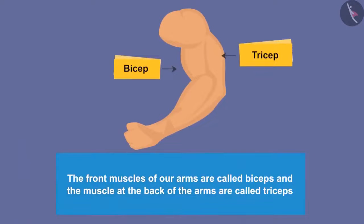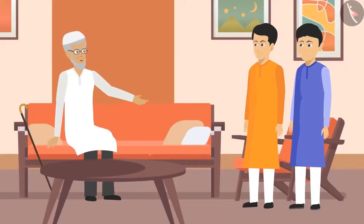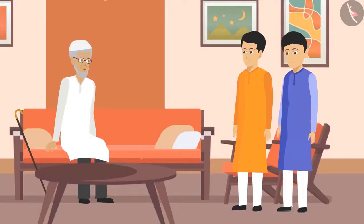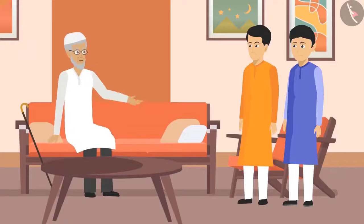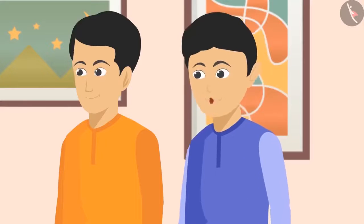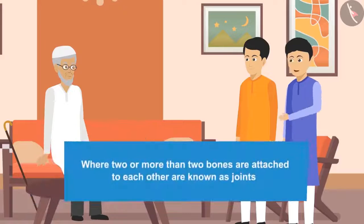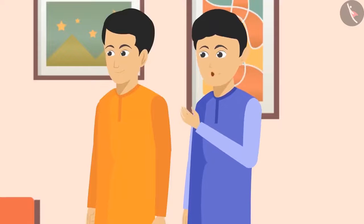Chacha asked whether we can bend or rotate body parts like hands and legs at places other than the joints. The answer was no. The students explained that we can move our hands, legs, or other body parts only from the places where two or more bones are attached to each other — these places are called joints. The palms are one of the most flexible parts of the body because they have many bones and joints.